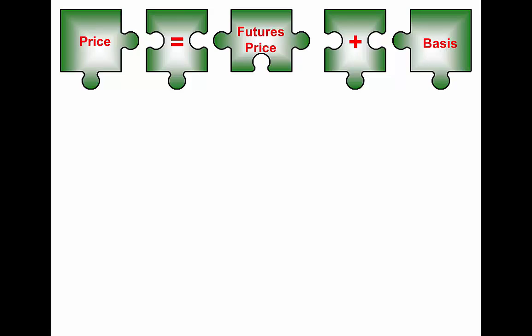In all commodity futures traded commodities, this formula will hold. If you don't remember anything else, this is the tape layered on your desk: price equals futures price plus basis. Let's say the basis at your local elevator is minus forty cents. That means if the futures contract price is four dollars and fifty cents, then the price posted at that elevator would be four dollars and ten cents — the futures contract plus the basis, which is minus forty, so you subtract it.